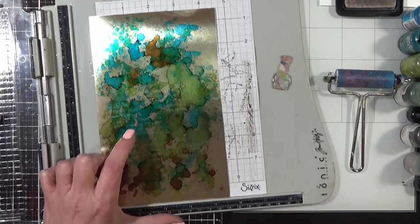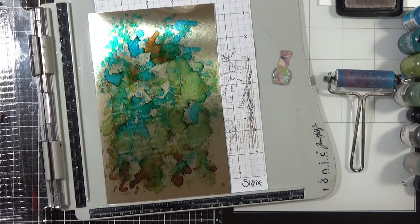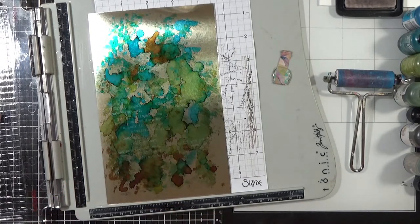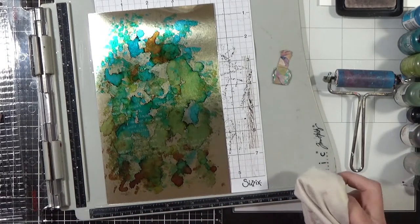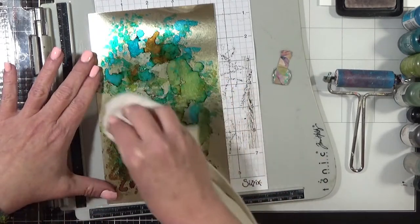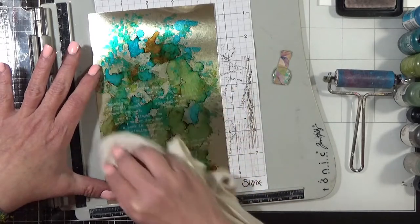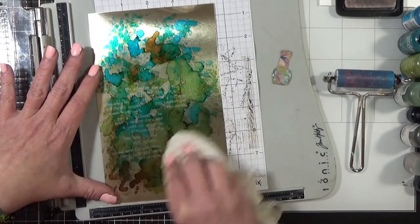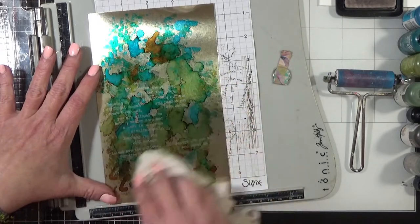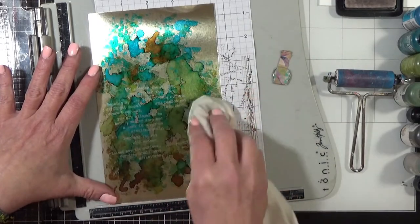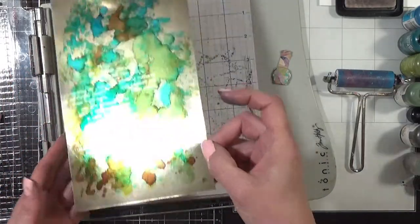So now you can see it coming up a little bit. I've got a really soft t-shirt here and I'm just going to gently start rubbing. And that's coming up even more. So it's just proof that you don't have to have Yupo.